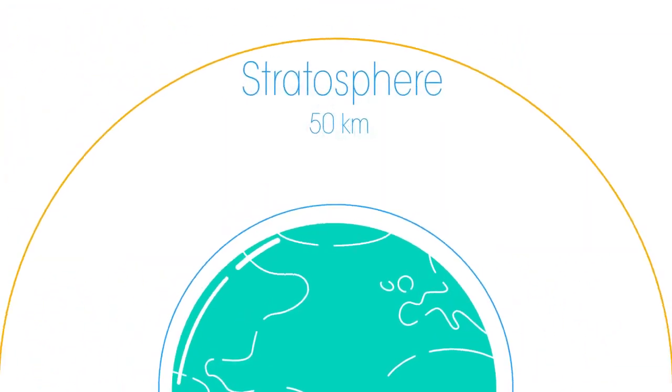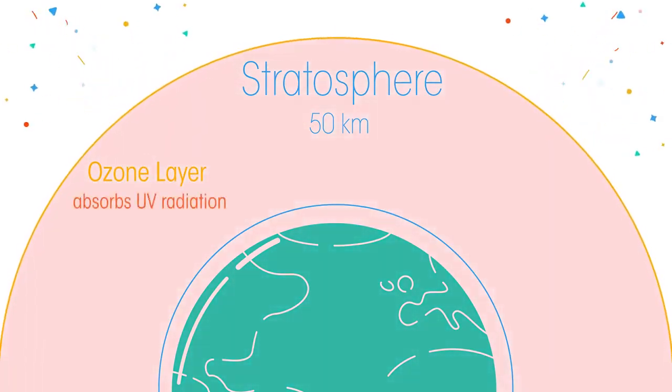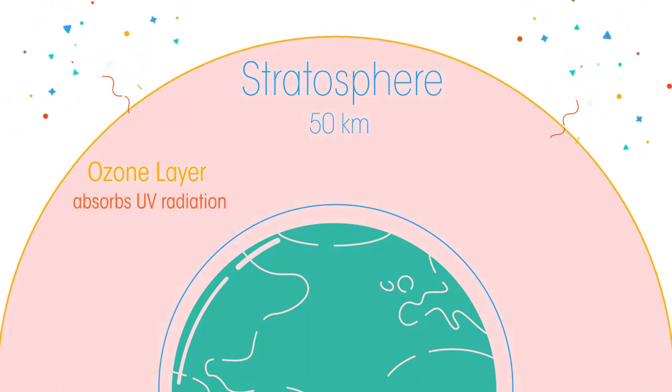Then the stratosphere up to 50 kilometers, which contains the very important ozone layer. The ozone layer both heats the stratosphere and also absorbs and scatters harmful ultraviolet radiation from the Sun, protecting all life on Earth.